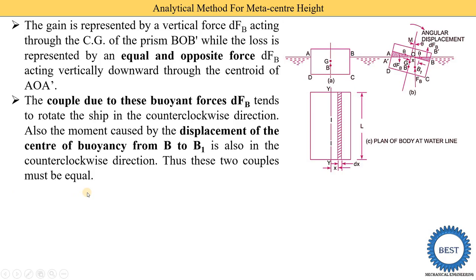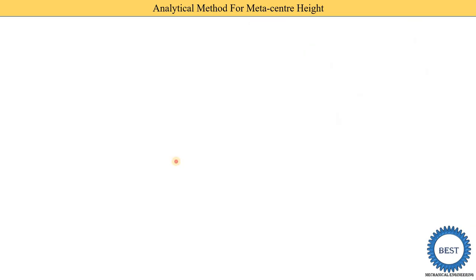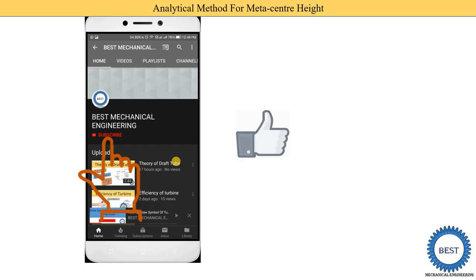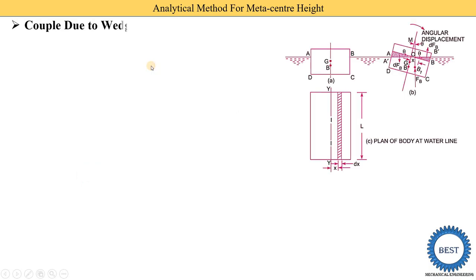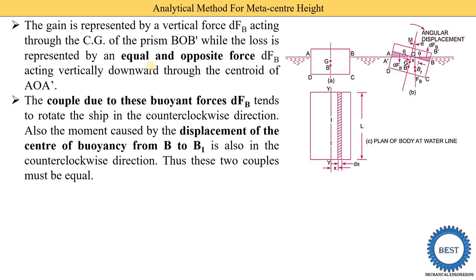These two couples must be equal. We equal these two equations of the two different couples to find the equation of metacentric height. The equation of moment is force times distance. In this case, the force is equal to the weight of the body. So first we are finding the couple due to the wedge. We consider, towards the right of the axis, a small strip of thickness dX at a distance X from O as shown in figure B.